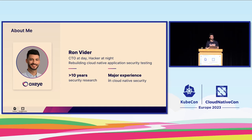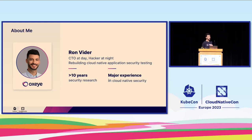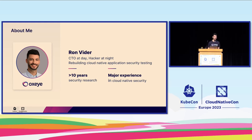I'll start with a short introduction about myself. My name is Ron Vidal. I'm the co-founder and CTO of Oxide Security. At Oxide, we are building an application security platform for cloud native environments, helping organizations find vulnerabilities in their custom code for Kubernetes-based applications. I've been in the cybersecurity landscape for over a decade since I learned how to hack websites when I was 16 years old, built my first application security testing tools, and in my free time I like to look for new vulnerabilities and do security research. In the past few years, I'm highly focused on the cloud native landscape.